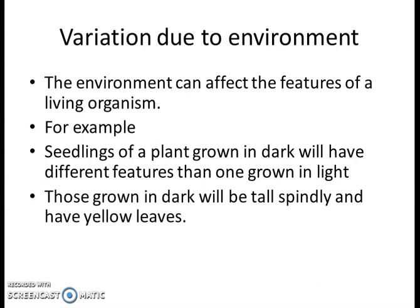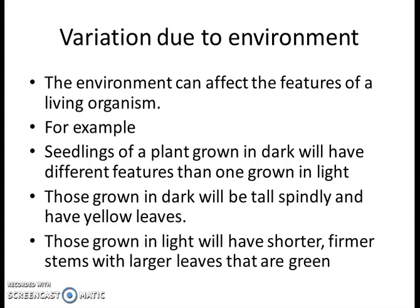Those grown in the dark will be tall, spindly, and have yellow leaves — their leaves will not turn green because they are not getting sunlight, and without sunlight their leaves will not turn green. But the one grown in the light will have shorter but firmer stems, a strong stem, larger leaves, and the leaves will be green. If you take the same species of plant and grow one in the dark and the other in the light, you will find visible differences between them.